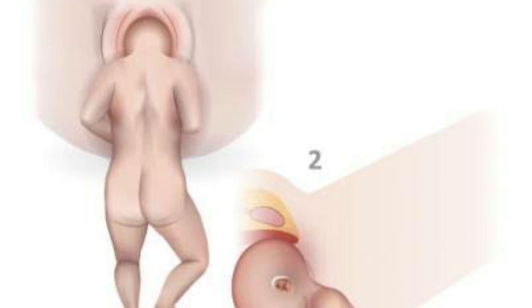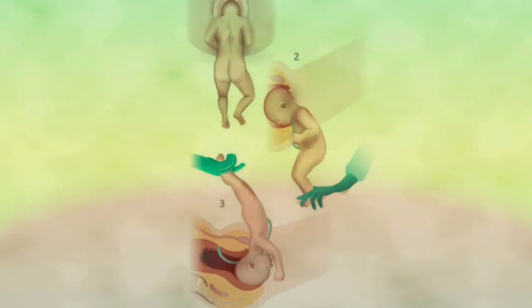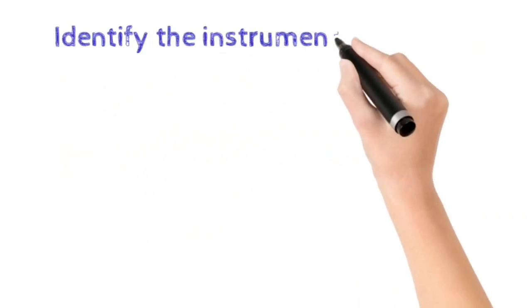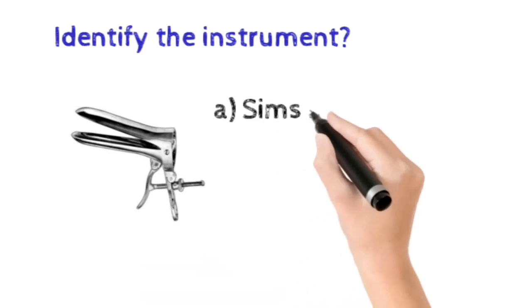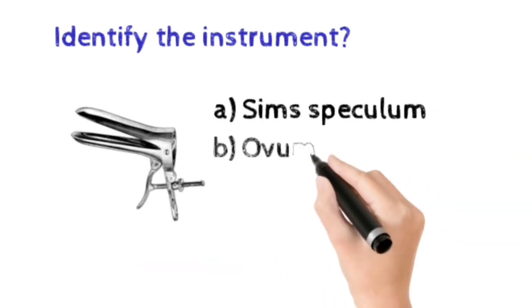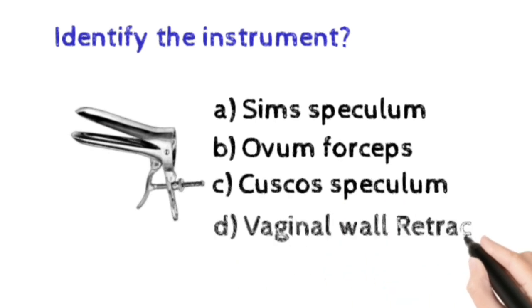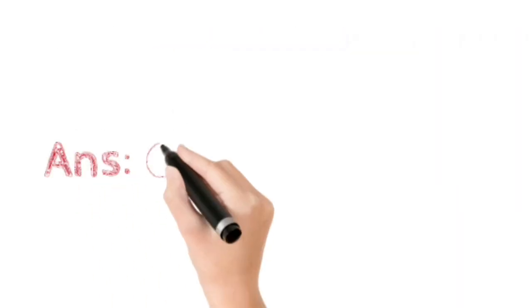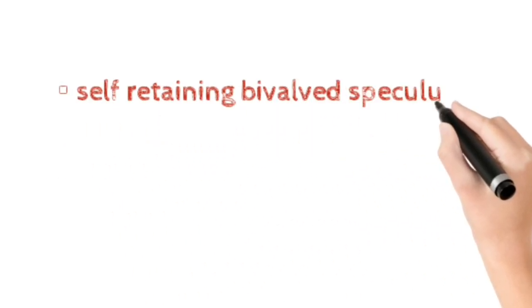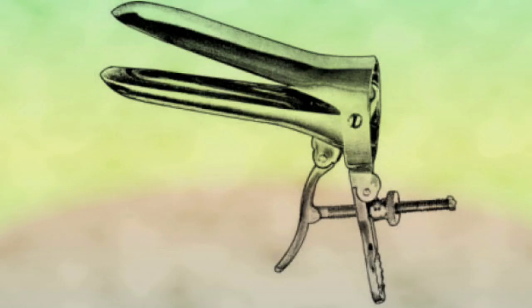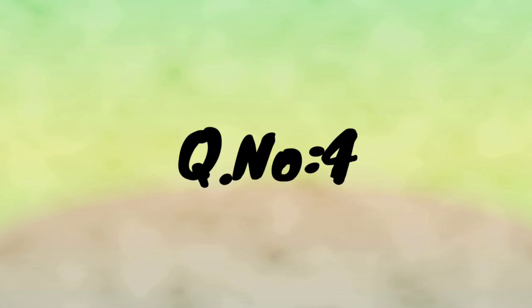Number three: identify the instrument. Option A: Sims speculum, Option B: Ovum forceps, Option C: Cusco's speculum, Option D: Vaginal wall retractor. The correct answer is Option C, Cusco's speculum. Cusco's speculum is a self-retaining bivalve speculum and it is used to examine the vagina and cervix.